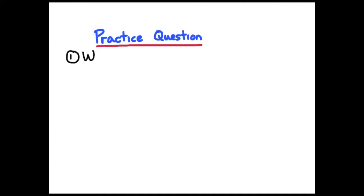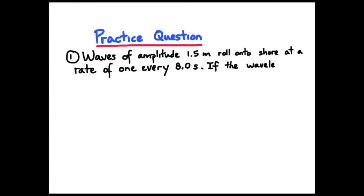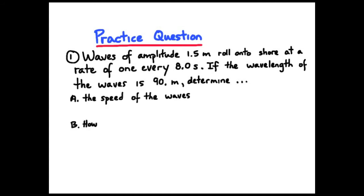Practice problem time. Get ready to pause your viewer. This will be a short answer question. Three parts here. Waves of amplitude 1.5 meter roll onto shore at a rate of 1 every 8 seconds. If the wavelength of the waves is 90 meters, determine the following.